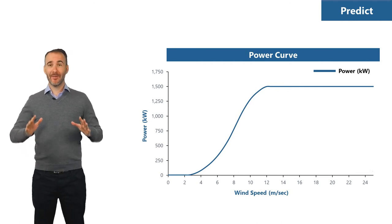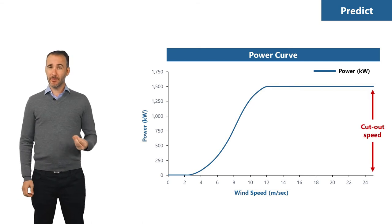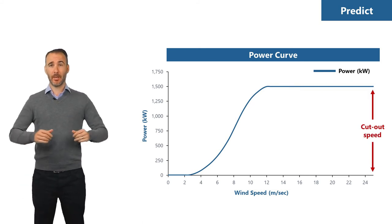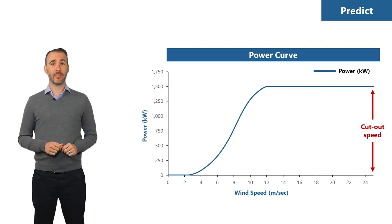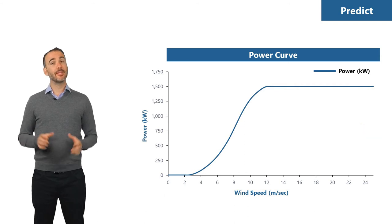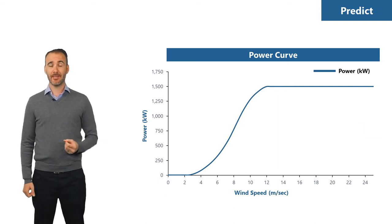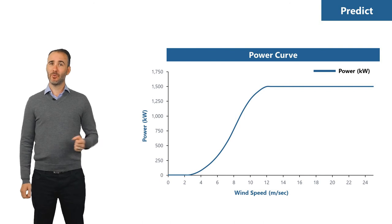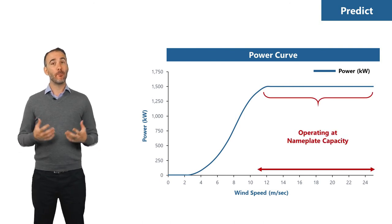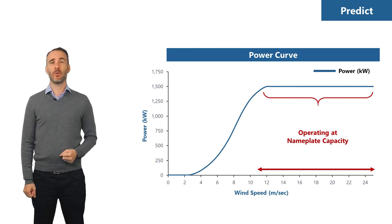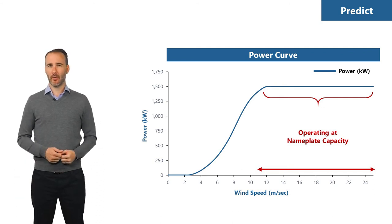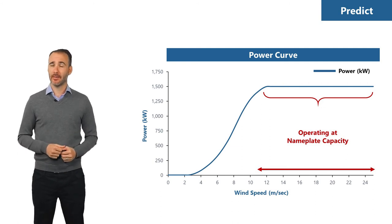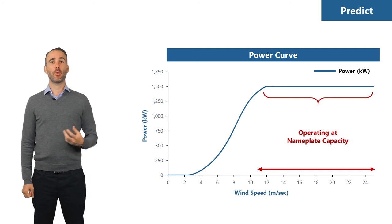Where the power curve ends is the cut-out speed. If wind speeds exceed about 25 meters per second, the equipment must shut down for safety and generates no power. So even though this turbine has a nameplate capacity of 1.5 megawatts, it only operates at that level when wind speed is between 11 and 25 meters per second — a relatively small fraction of the year. For much of the time the turbine operates below nameplate, and sometimes it isn't generating at all. Each turbine model has pros and cons, and only a subset will be suitable for a specific site.